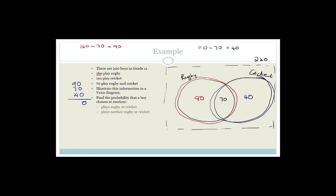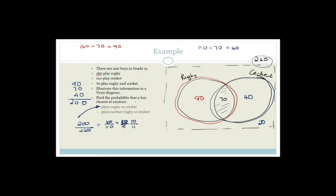Finally, we need to add this up to check it equals 220. We've got 90, 70, and 40 — that's 200. So there are 20 kids that don't play rugby or cricket and are not inside these circles. Now it says: find the probability that a boy chosen at random plays rugby or cricket. Rugby or cricket is all of the two circles, so the probability is 200 out of 220, which simplifies to 10 over 11.